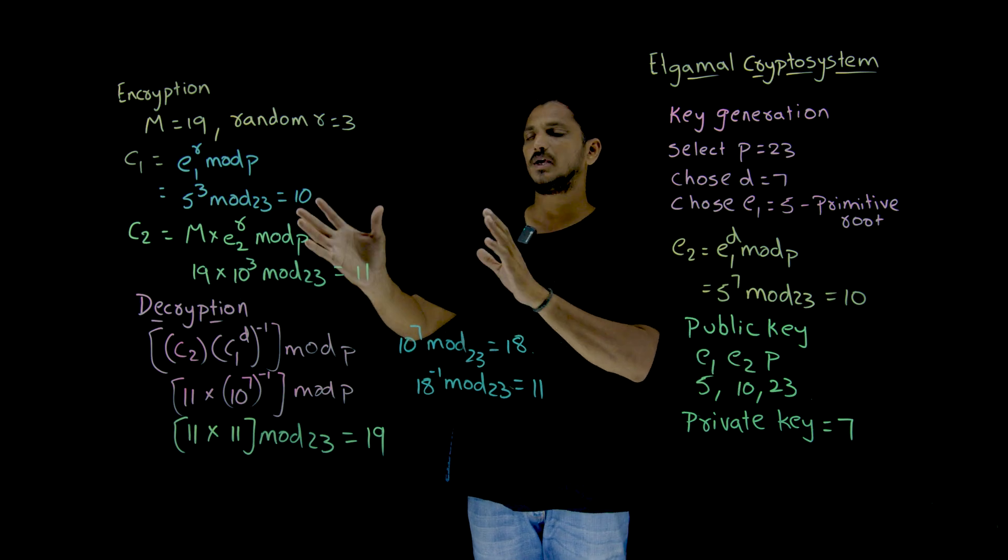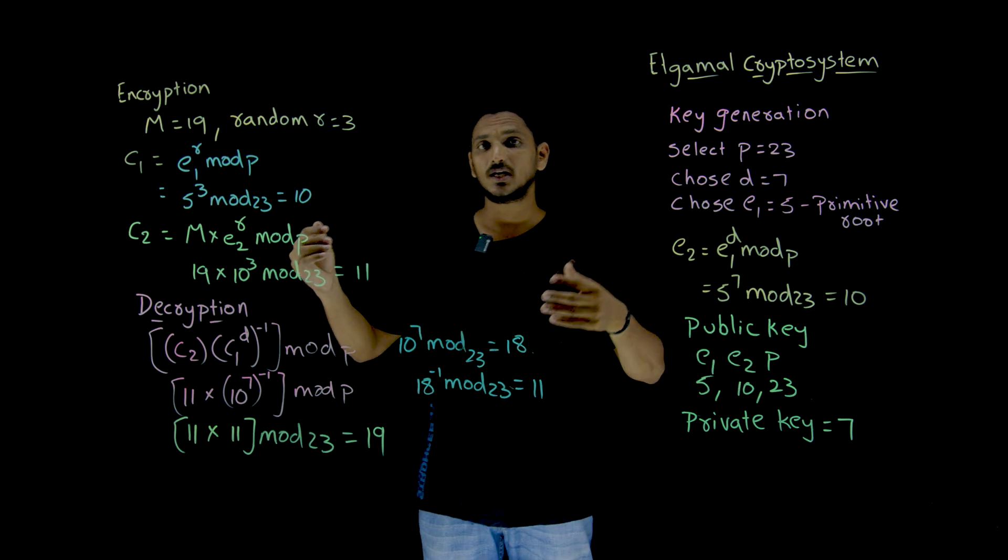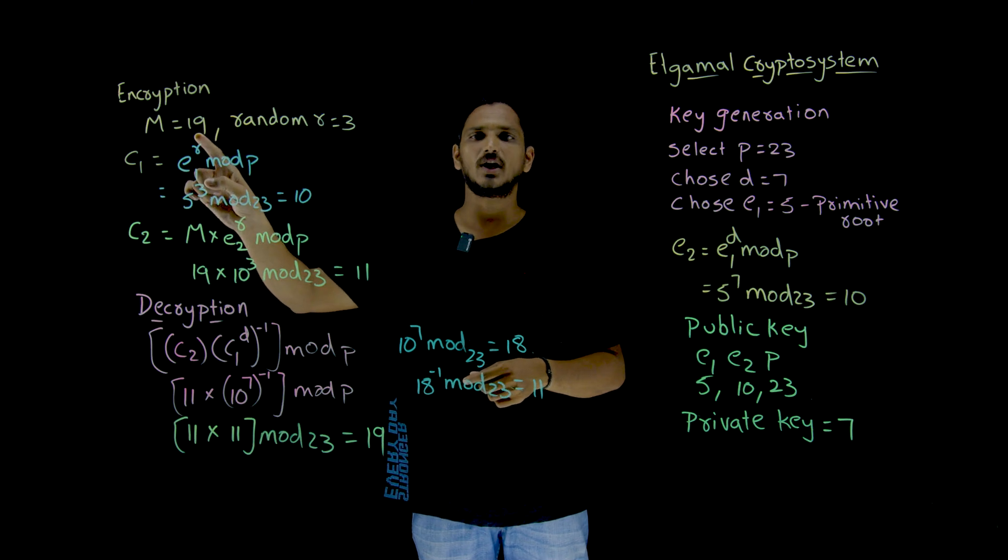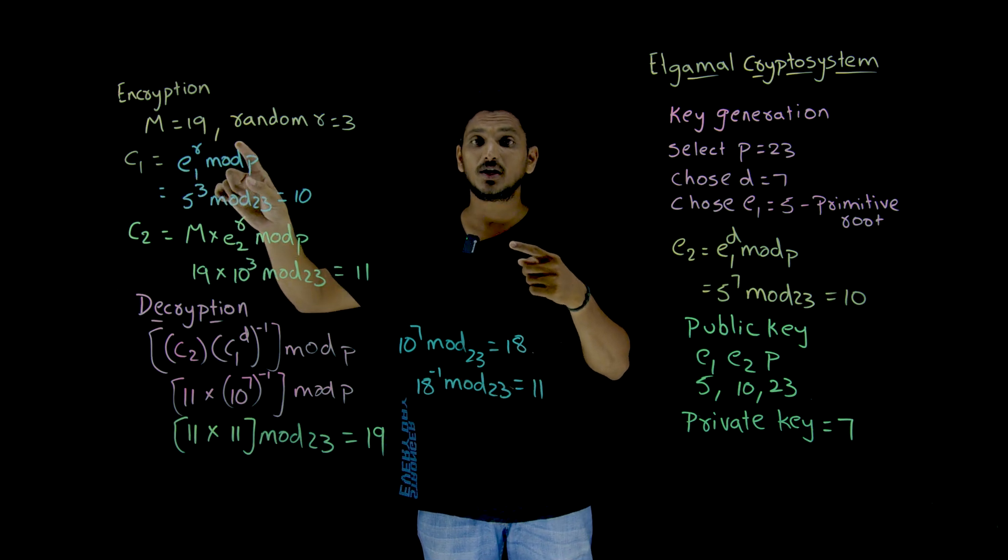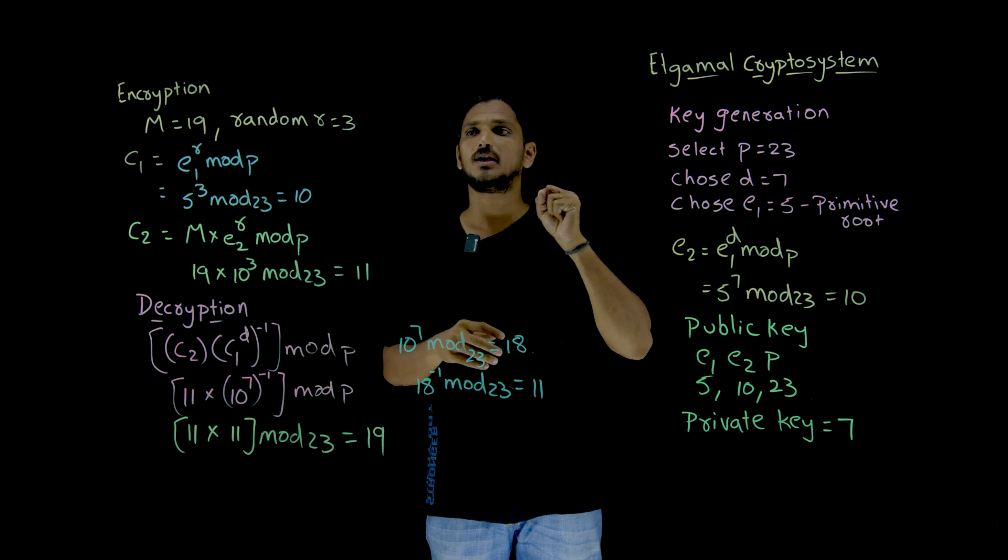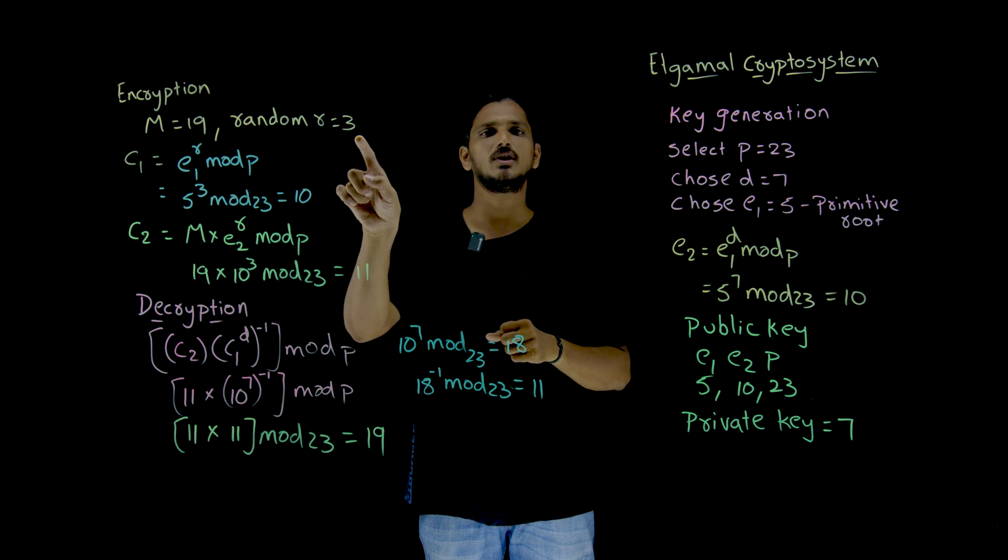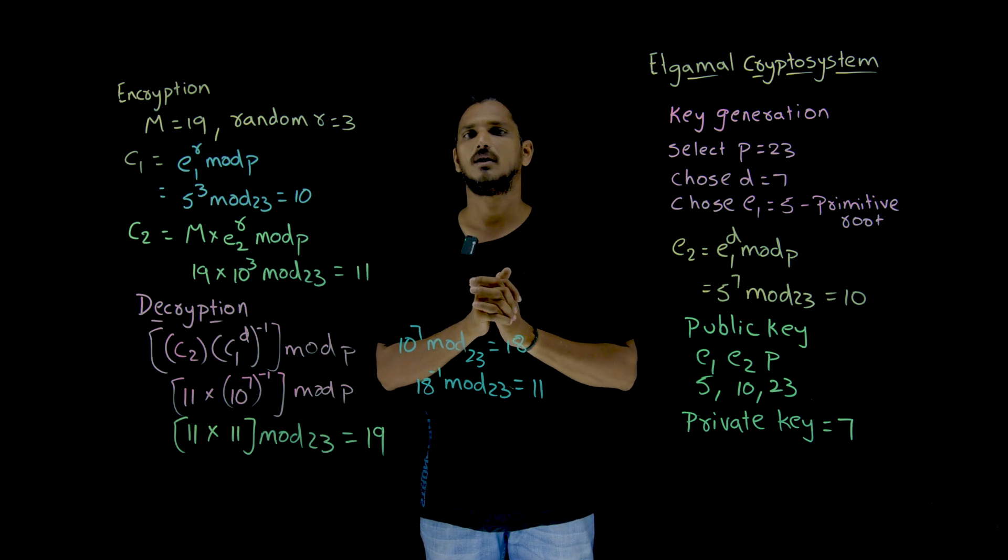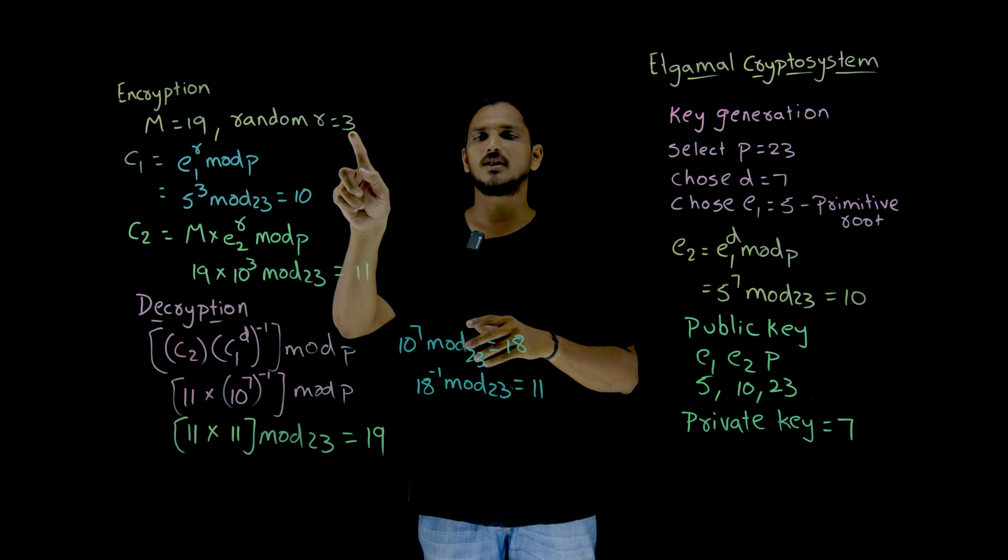Once you have this public keys, what happens inside the encryption? In the encryption, if our actual message is 19, during the encryption, he is going to randomly generate a key, R value which is 3 here. You can generate any number from Z23 star.